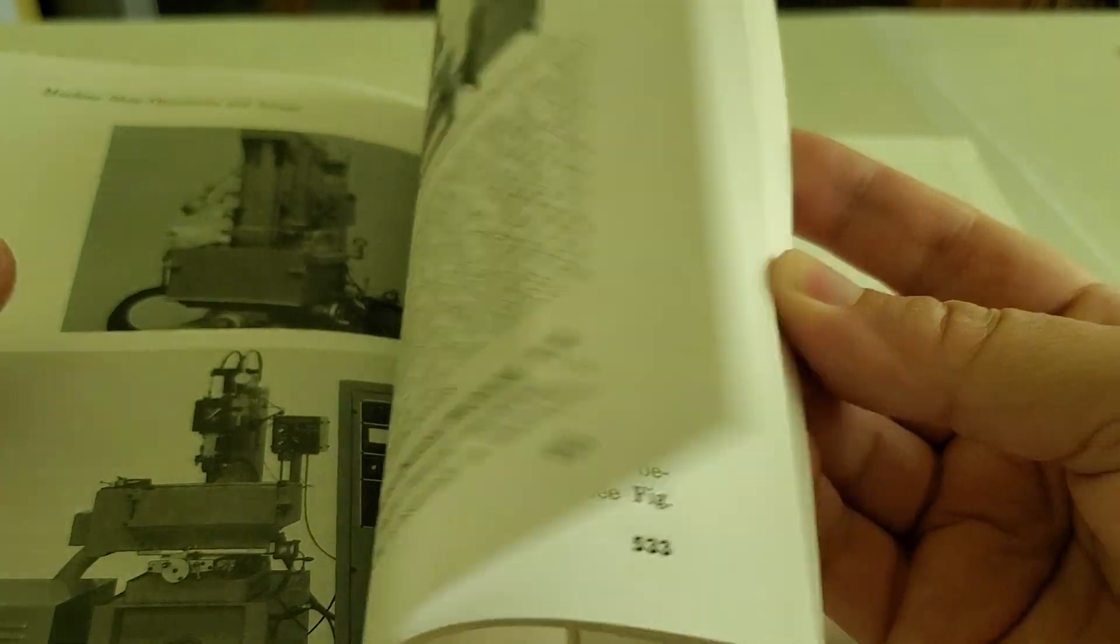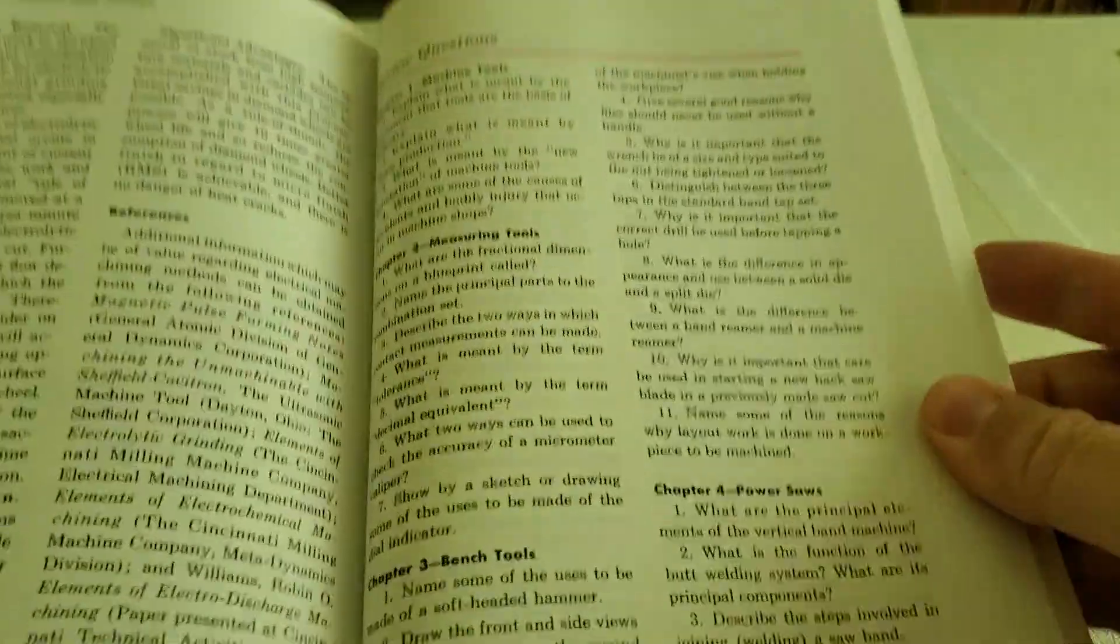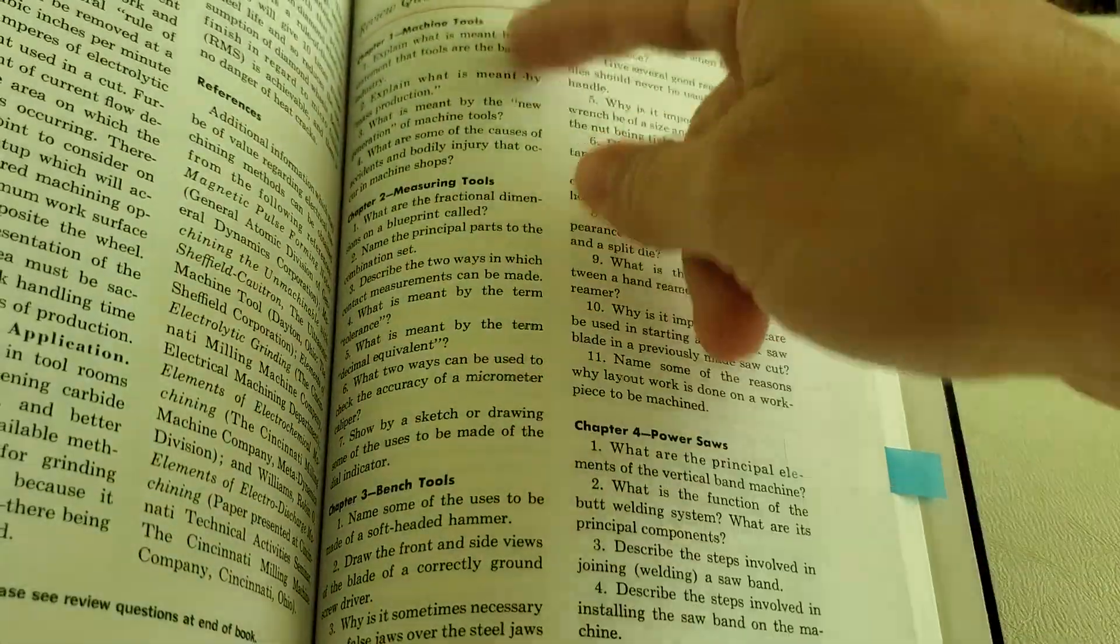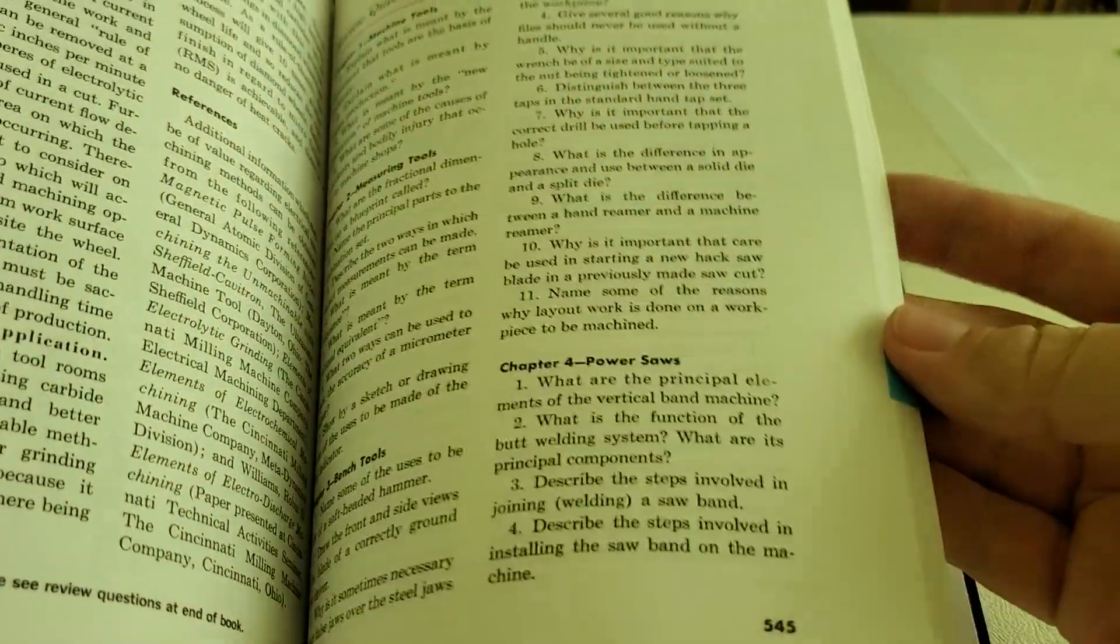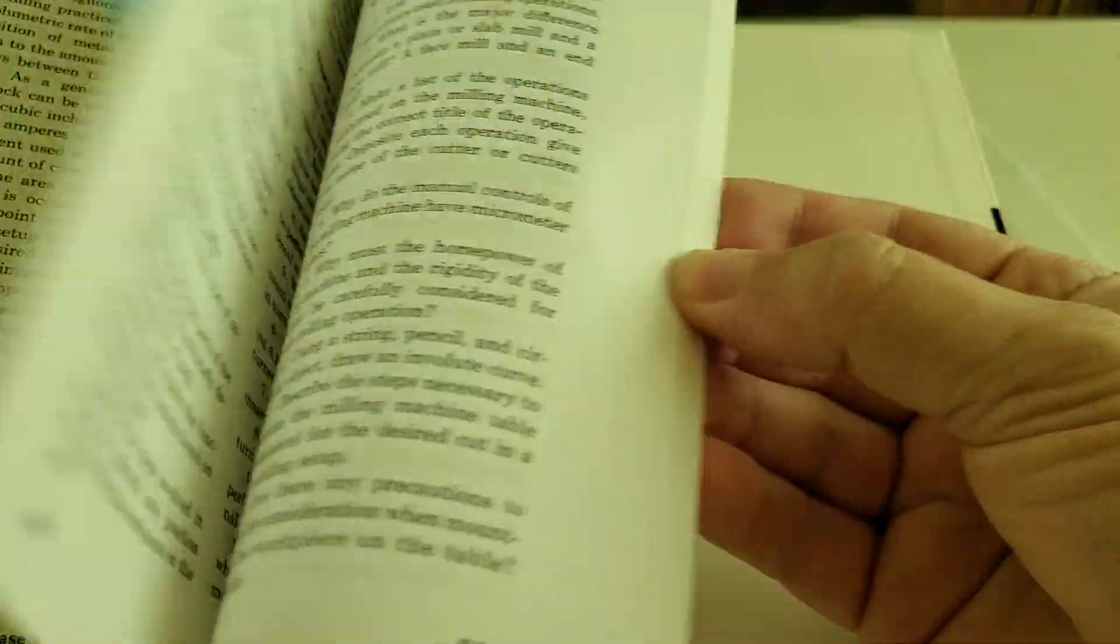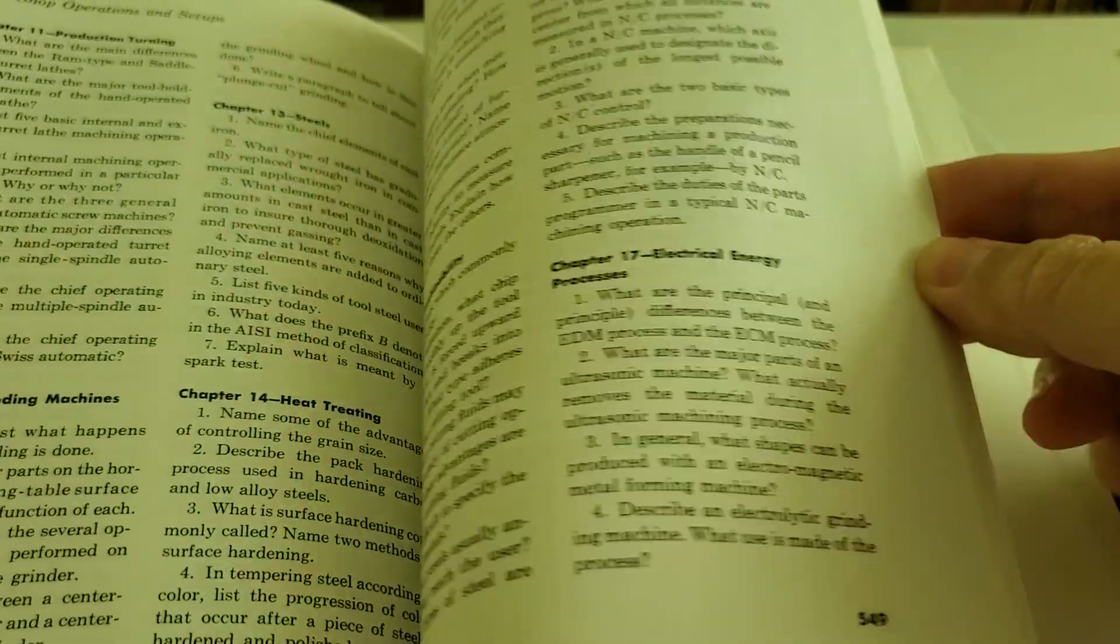It talks a little bit about electrical discharge machining and those types of operations. Again, a lot has changed since then. But it's nice that it gets covered. And then in the back, there are review questions for all of the chapters. Again, this is a textbook. So this would be the kind of thing that would have been passed out to students, and these questions would need to be answered.